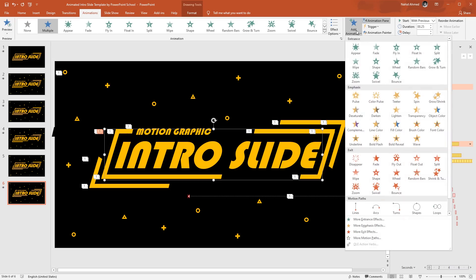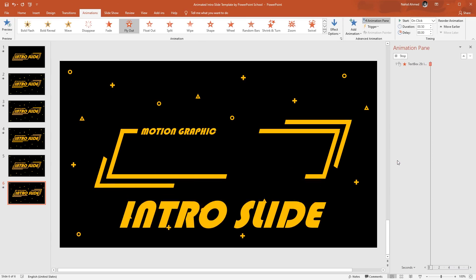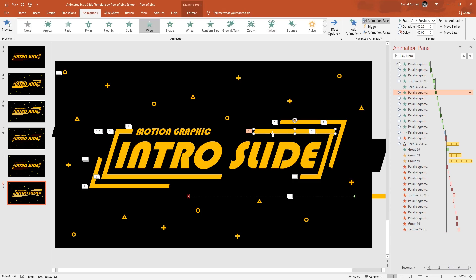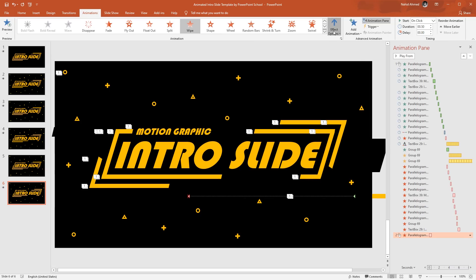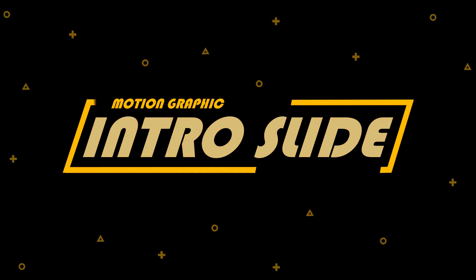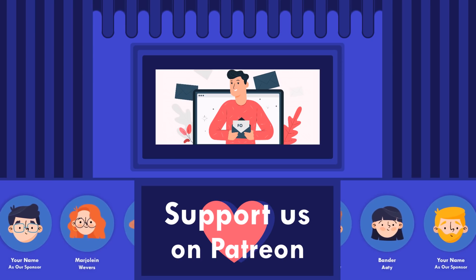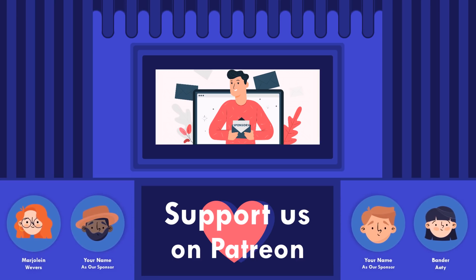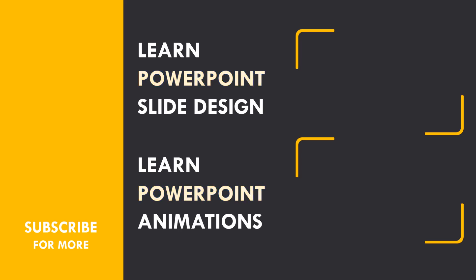Now select this bigger text box, from Add Animation select Fly Out which is under Exit. From Effect Options, select To Right. Set start With Previous, keep the duration 0.50 seconds, and increase the delay 0.25 seconds more. Then select this particular object, from Add Animation select Wipe which is under Exit. From Effect Options, select From Right. Set start With Previous, keep the duration 0.25 seconds, and increase the delay 0.25 seconds more. So our work is done — if you start the slideshow you can see everything looks perfect. As always, you can download this template for free; I'll provide the download link in the description. If you have enjoyed this, make sure you give a like to this video, subscribe to our channel, and check out our Patreon page. That's all from this video — see you in the next one, and thanks for watching.